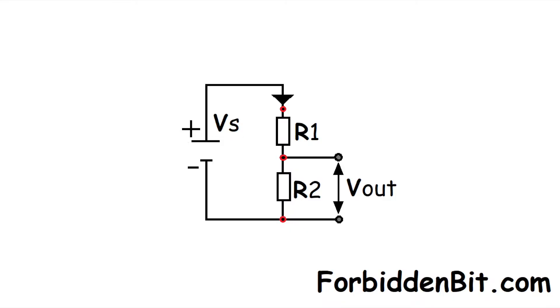A voltage divider consists of two resistors connected in series across the supply voltage, which is divided between the two resistors.